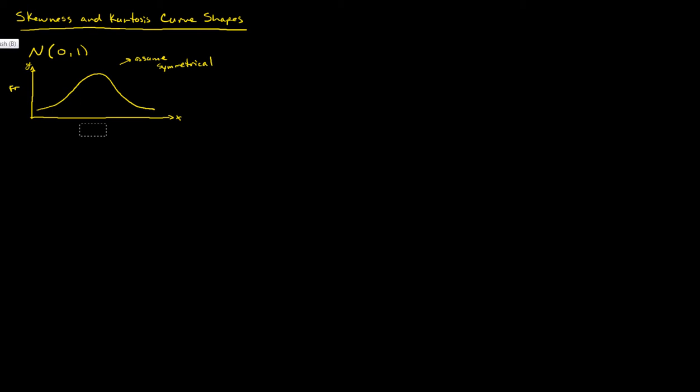We know that the mean, median, and mode are all at the same point. In a normal distribution they're all the same spot on this standard normal curve. Now let's talk about what deviations look like from this standard normal curve relative to skewness and kurtosis.